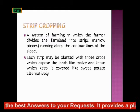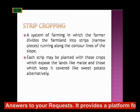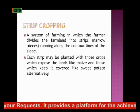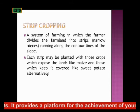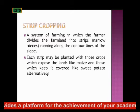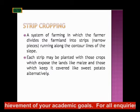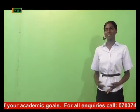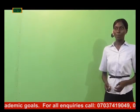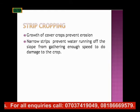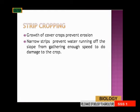It will also plant two types of crops on the strip: plants that expose the land, such as maize, and others that cover the land. Maize will just stand with spaces on the farm, but other plants that cover the soil are planted alternately. For example, potato is a cover crop — potato will cover the soil while maize stands tall. The growth of cover crops prevents erosion, and the narrow strips prevent water from running off the slope and gathering enough force to damage the crop.